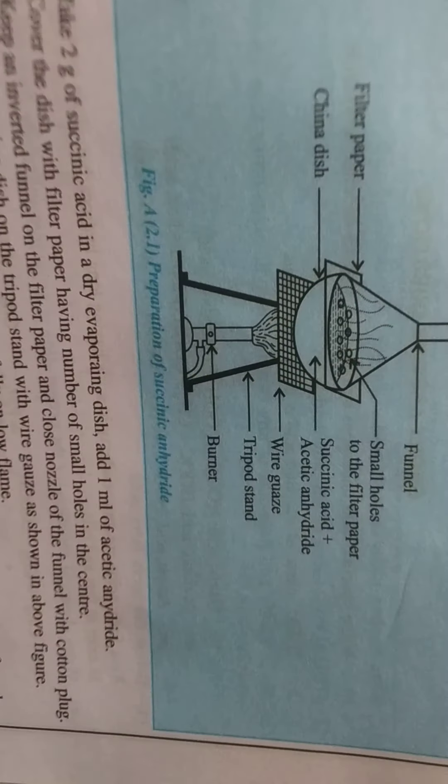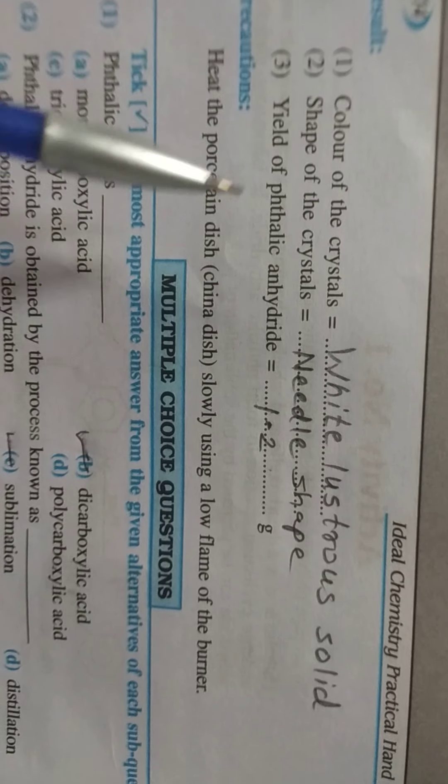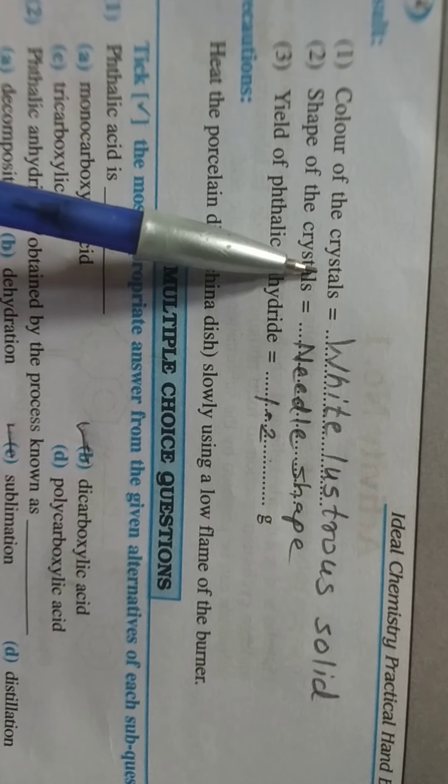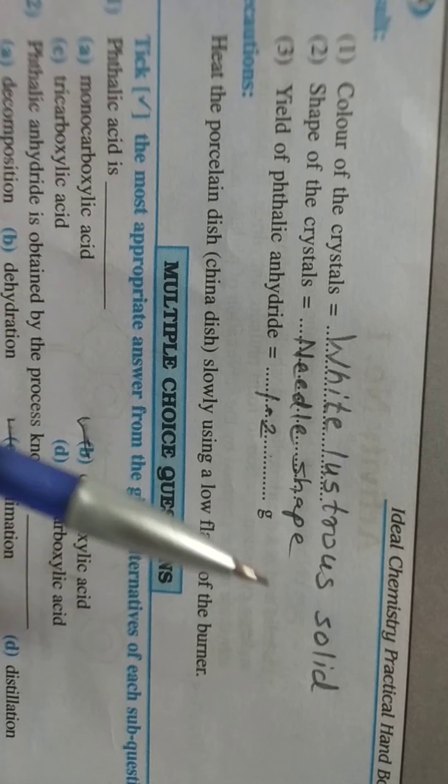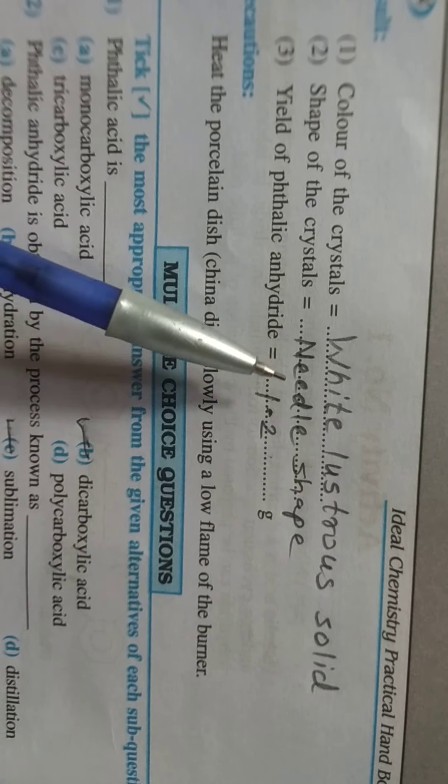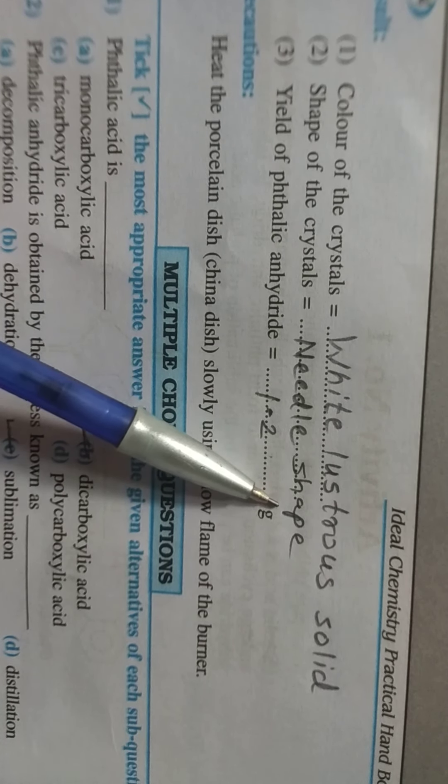Friends, now we write the result. Color of the crystal we obtain is white lustrous solid. Shape of the crystal is needle shape of phthalic anhydride.